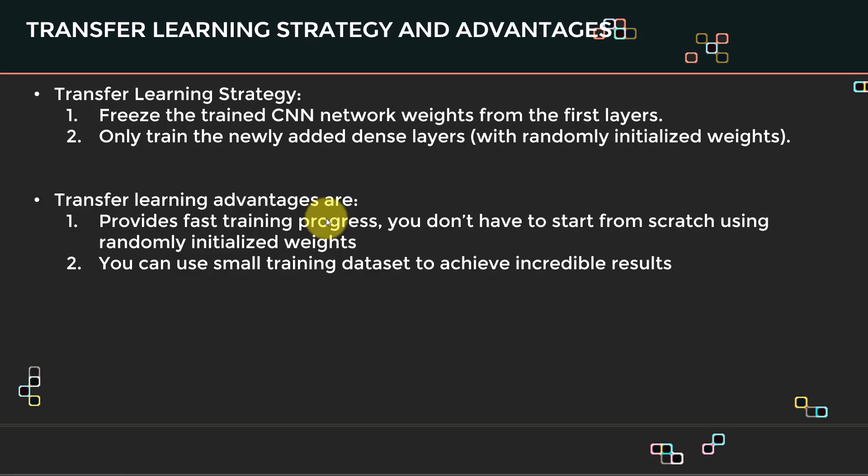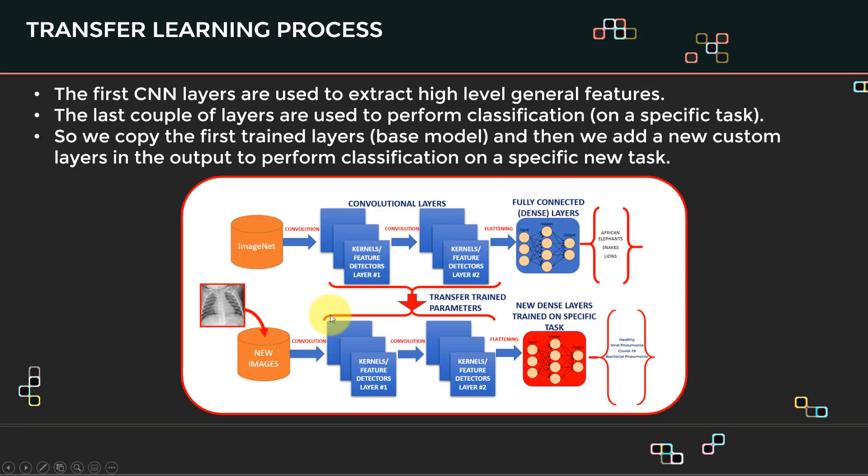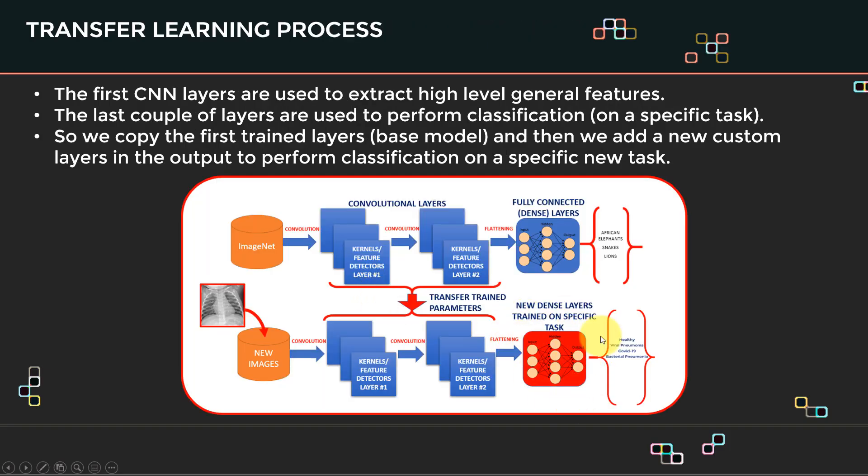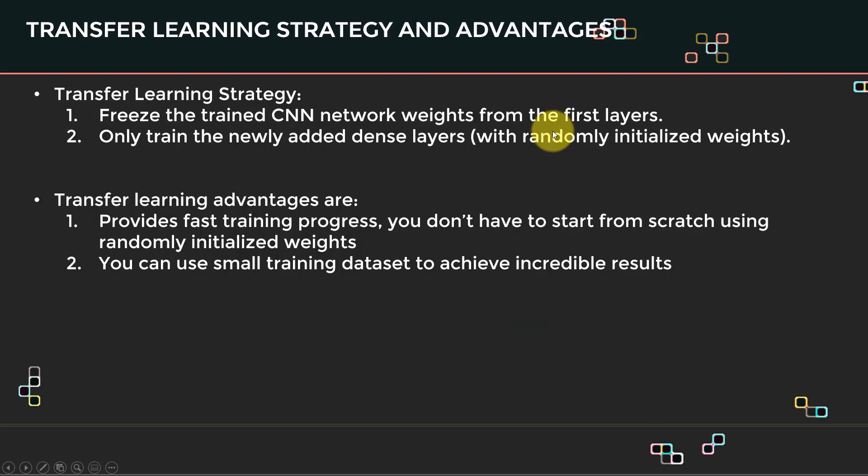So the question is, what are the advantages of transfer learning? So the advantages of transfer learning is, first, fast training. You don't have to start from scratch. You don't have to start from randomly initialized weights. The second point is, you can use small training data sets to achieve incredible results. For example, in our case, we only had like 100 images per class, which is pretty incredible. And when it comes to the training strategy of transfer learning, what we do is that we freeze the trained CNN network weights from the first layers. So we actually transfer the knowledge here, and then we freeze those layers. And what we do afterwards is that we add a new dense artificial neural network, and then we train only this. And that's the strategy when it comes to training of our artificial neural network based on transfer learning technique.